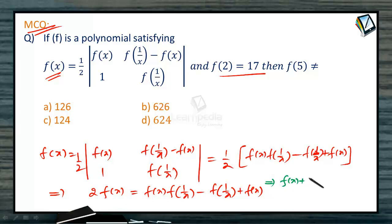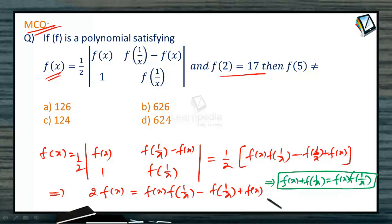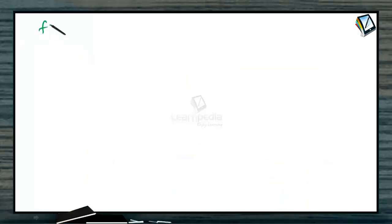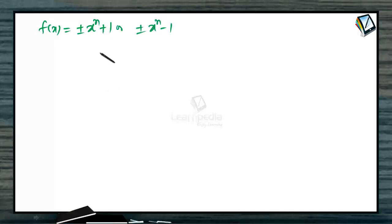Finally this simplifies to: f of x plus f of 1 by x equals f of x into f of 1 by x. If any function satisfies this property, then the function must be of the form plus or minus x to the power n plus 1, or plus or minus x to the power n minus 1.